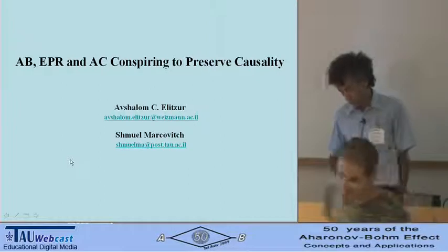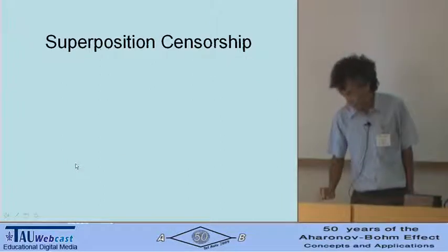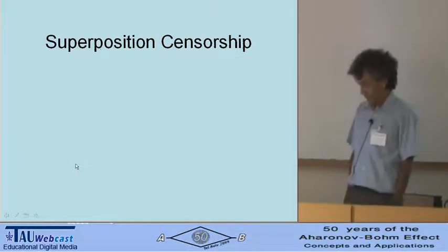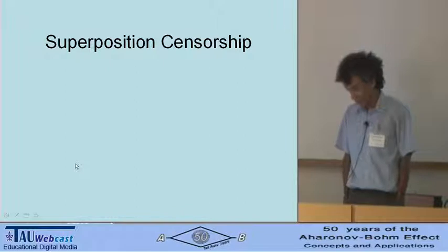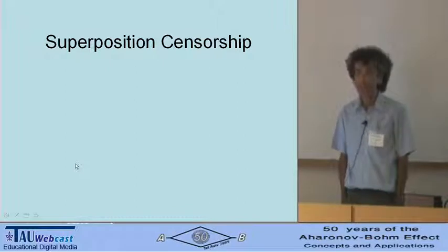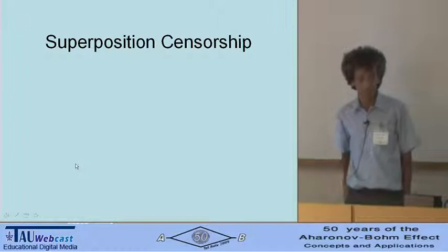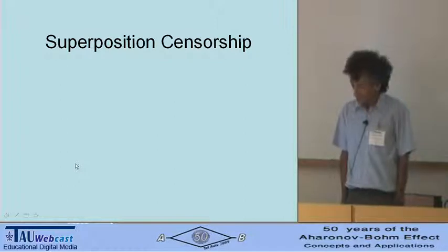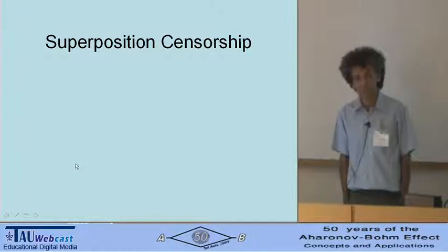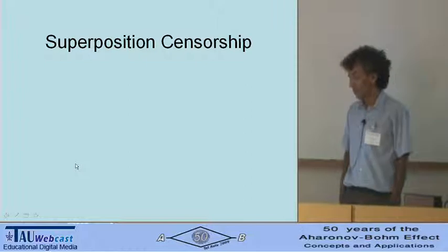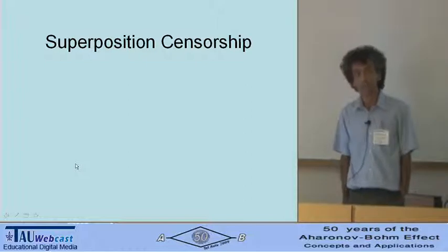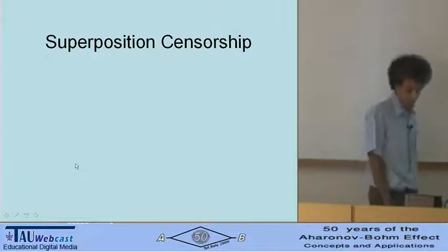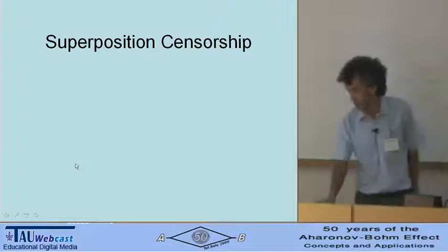We begin with a very basic notion in quantum theory which is superposition. Superposition lies at the basis of the theory and at the same time it is subject to a very interesting censorship. You must never, you can never observe a superposition directly. You can only infer about its existence indirectly later.